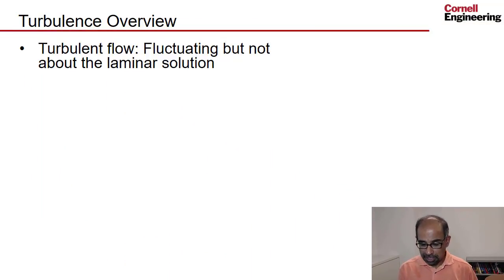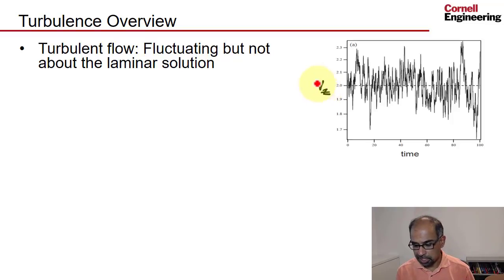So turbulent flow is fluctuating but not about the laminar solution. If I go into the flow that we have and track, say, the axial velocity versus time, I will see something like this. So I've plotted axial velocity versus time. This is a schematic view of it and you'll see these random fluctuations. These fluctuations happen over very short time scales.